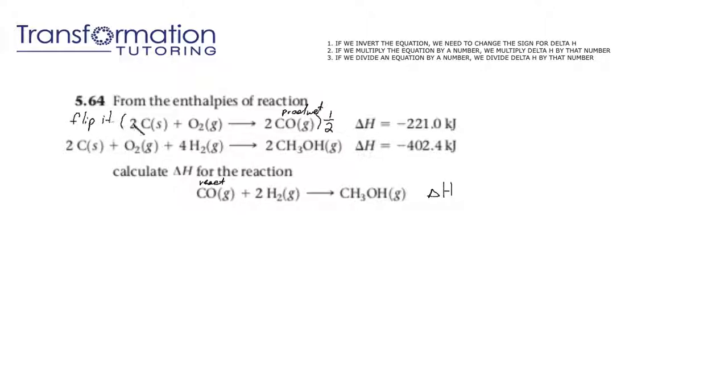Let's go ahead and flip and divide by 2 our reaction to see what we get. So we will get CO gas goes to C solid plus 1 half. Remember I am dividing every coefficient by 2 and I also invert the reaction.